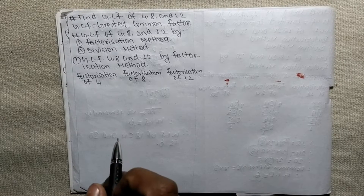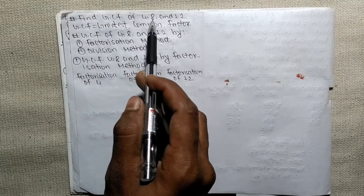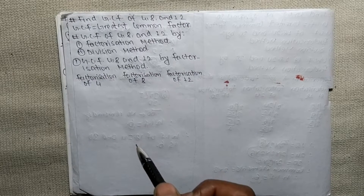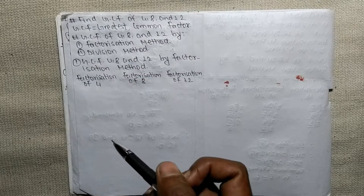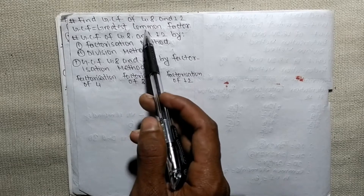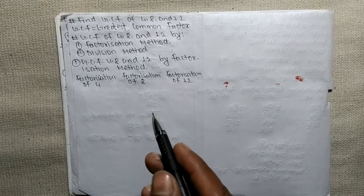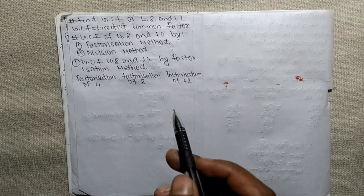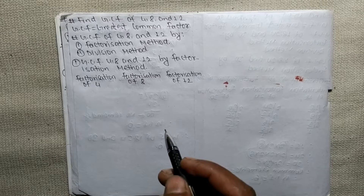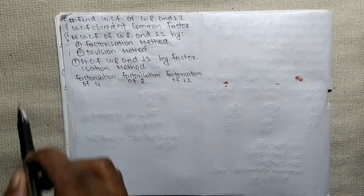Today in this video we shall learn how to find GCF of 4, 8 and 12. Before finding GCF, we should know what GCF stands for. GCF stands for greatest common factor. We shall find GCF of 4, 8 and 12 by two methods: first by factorization method and second by division method.